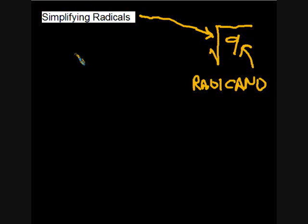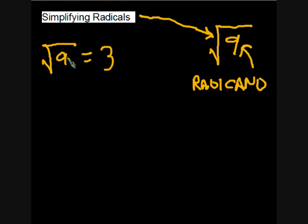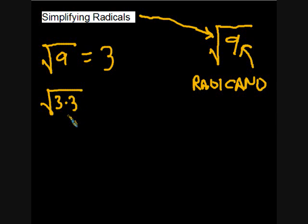We're going to try to simplify some radicals. Simplifying a radical like the square root of nine is rather straightforward — the most simple version is simply three. That's because the square root of nine is the same as the square root of three times three, and anytime we have two factors multiplied together under the radical sign, we can take one of them out and leave nothing underneath.